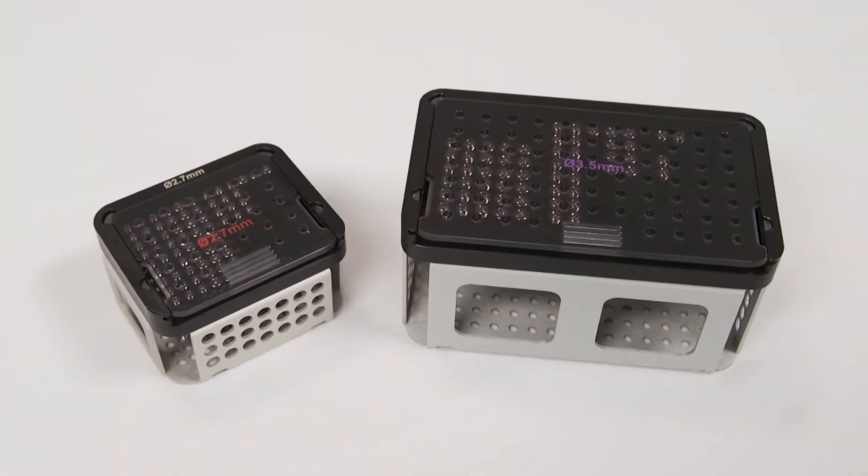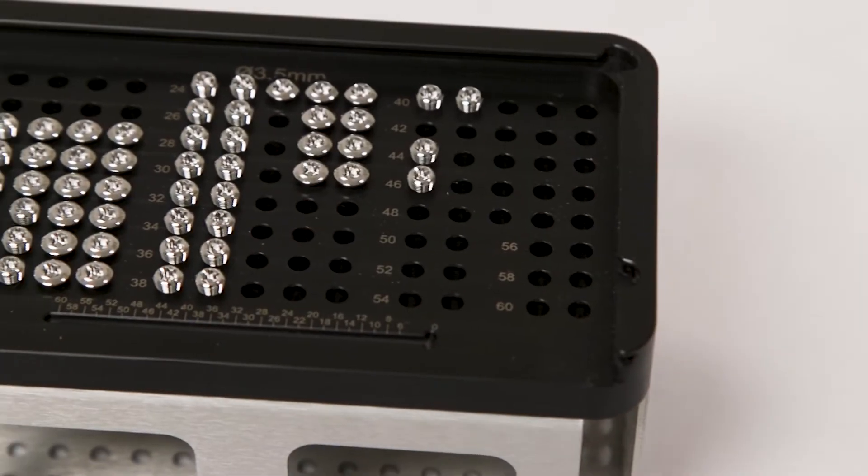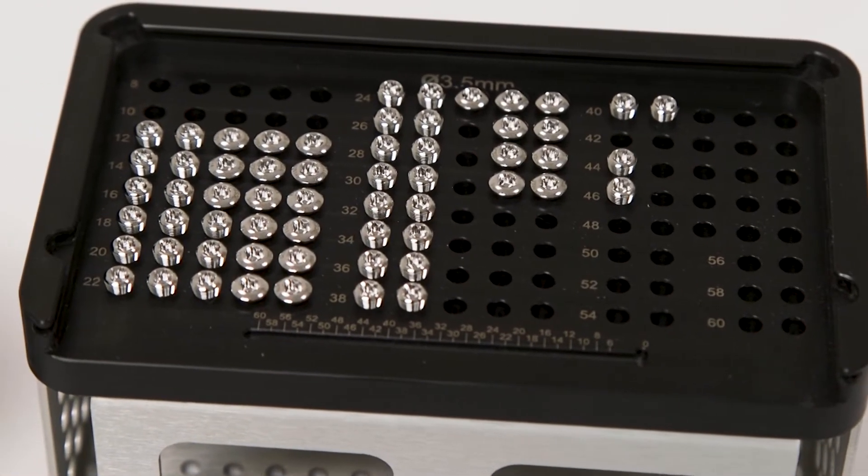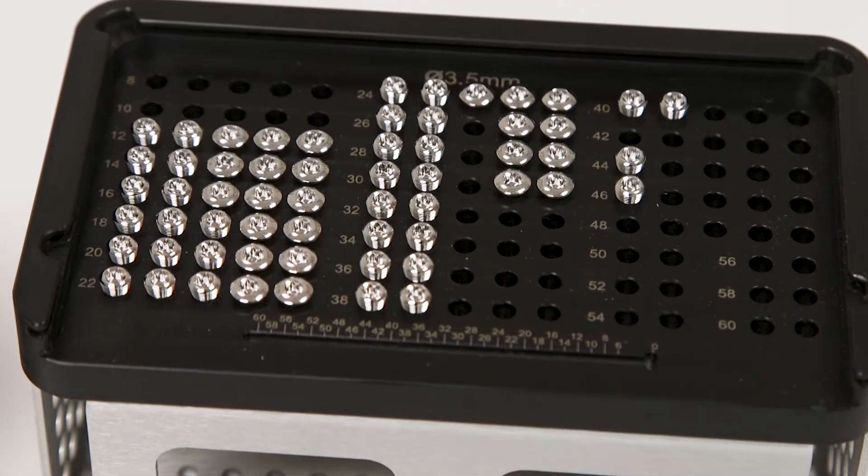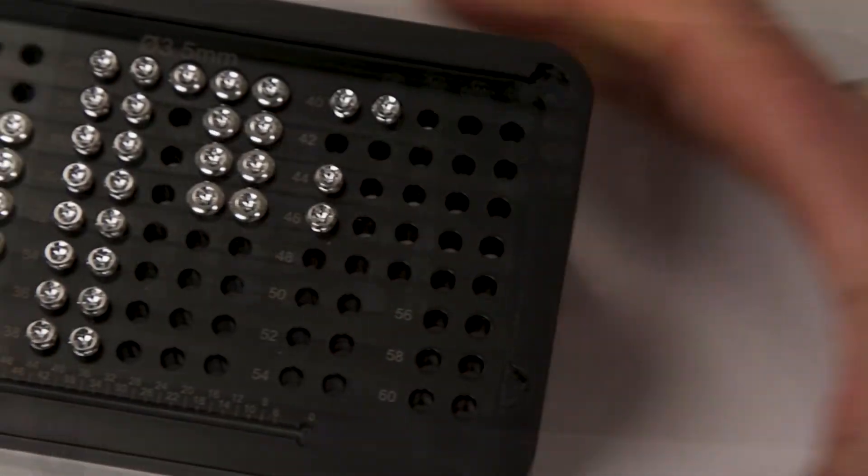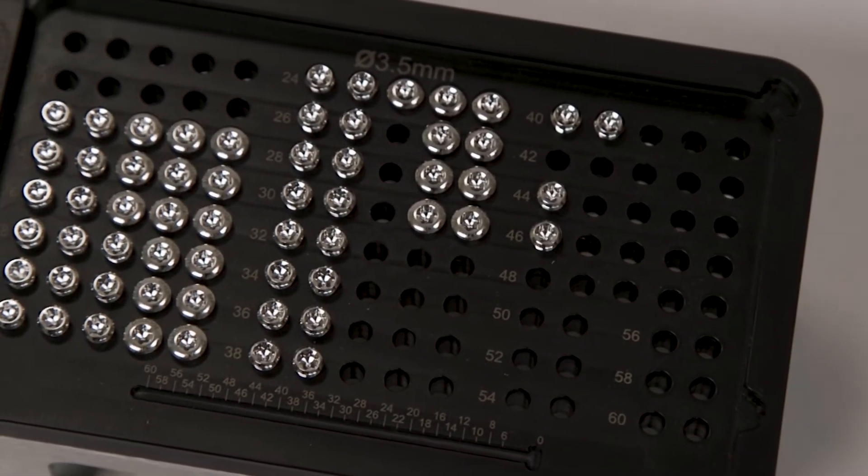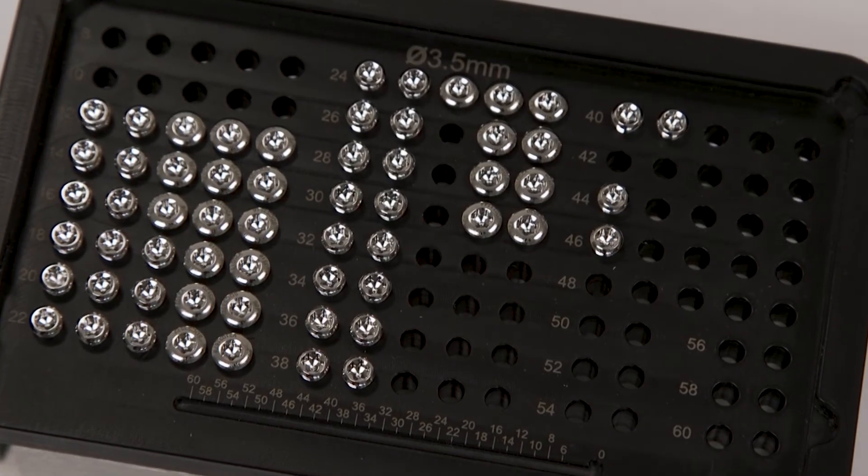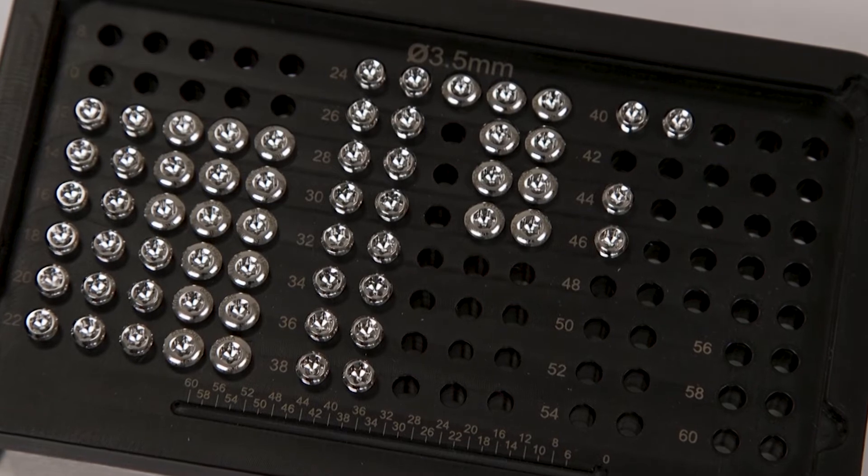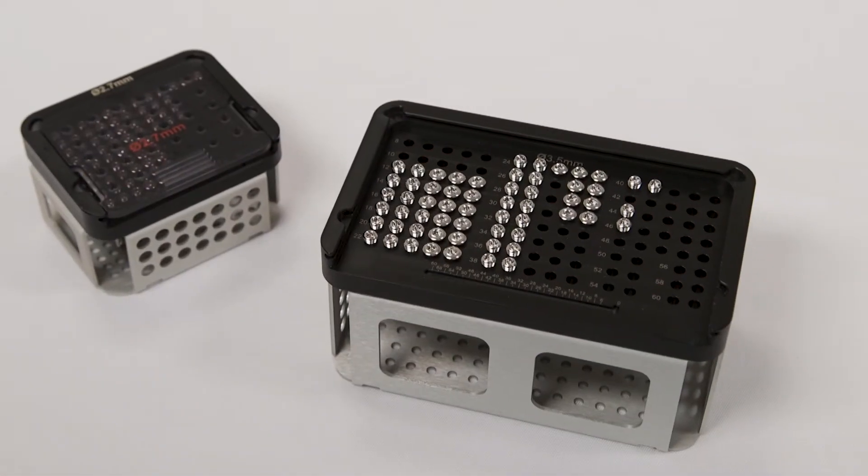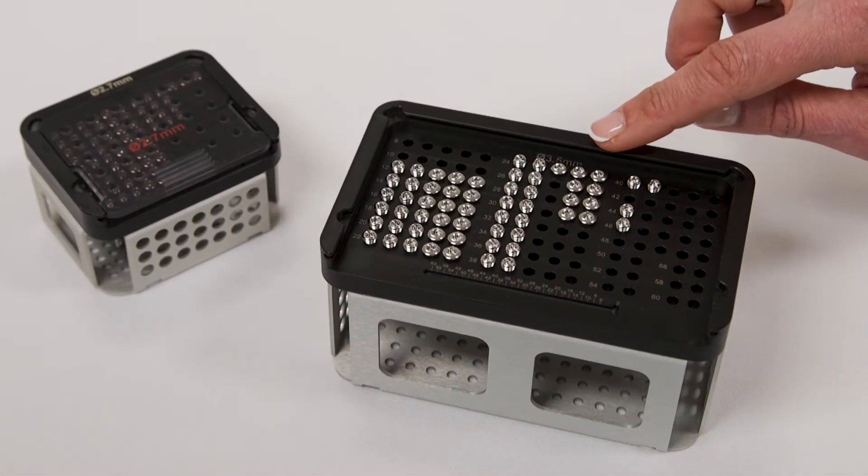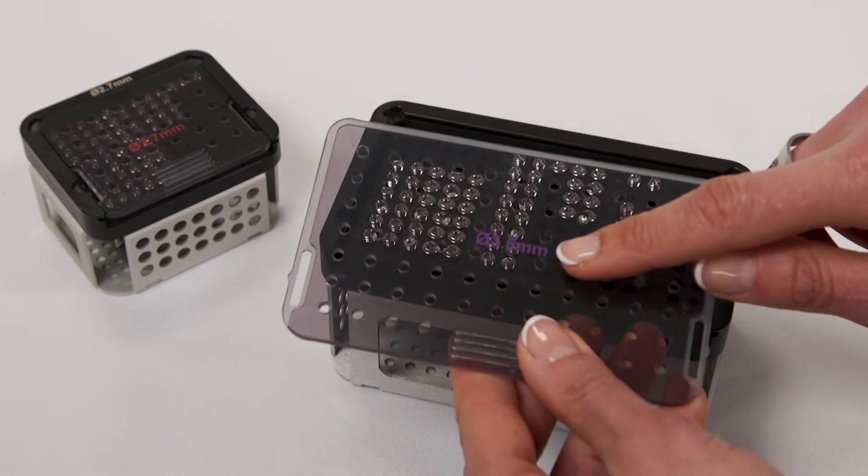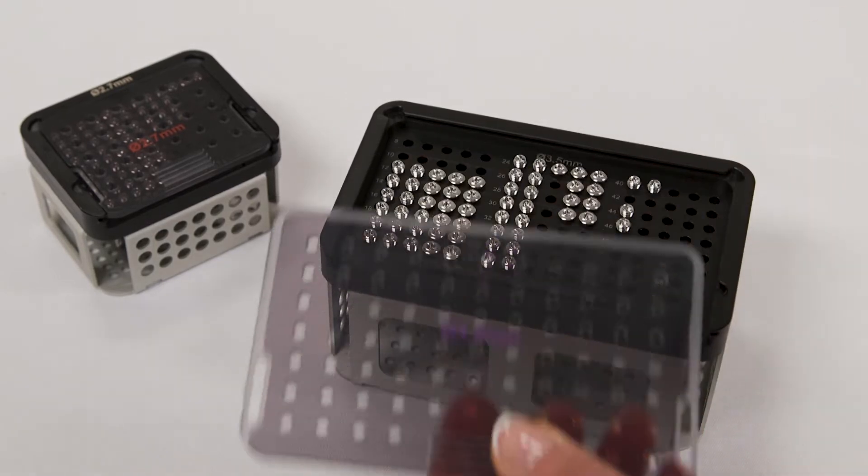The two screw caddies are supplied with a mixture of Star Drive Locking and Star Drive Cortical self-tapping screws. They are clearly marked in rows to make screw selection simple and feature a recessed measuring scale for double checking screw length during a procedure if necessary.